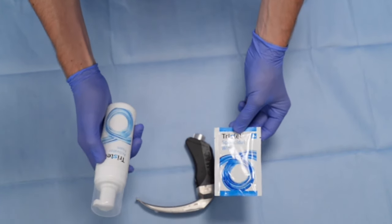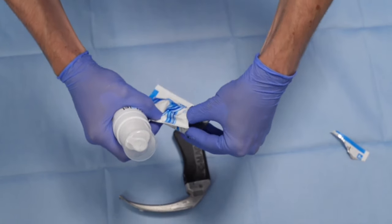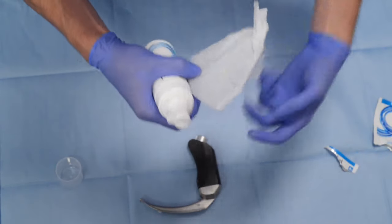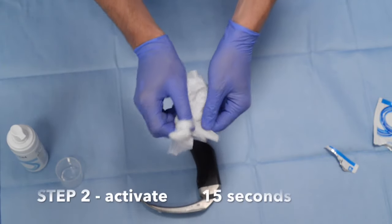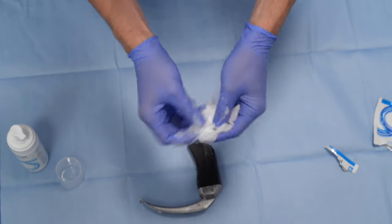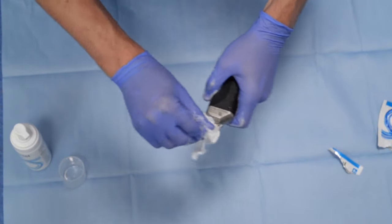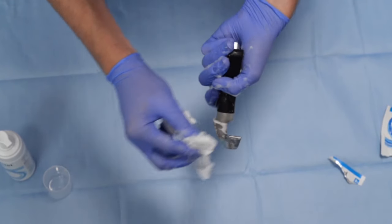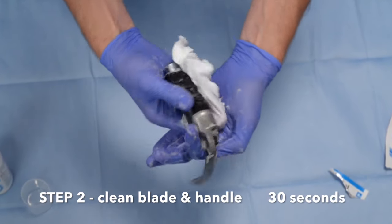Step 2 involves the activator foam and wipe 2A. Take the wipe, add three squirts, and activate the mixture for 15 seconds, making sure it's all spread. Then proceed to carefully wipe the rest of the blade. Do this for 30 seconds.